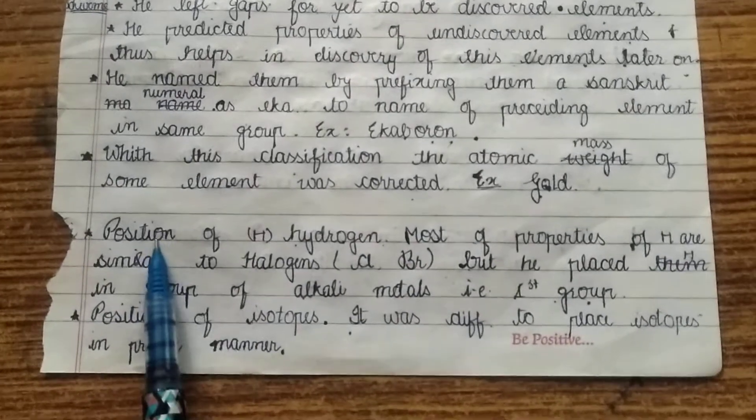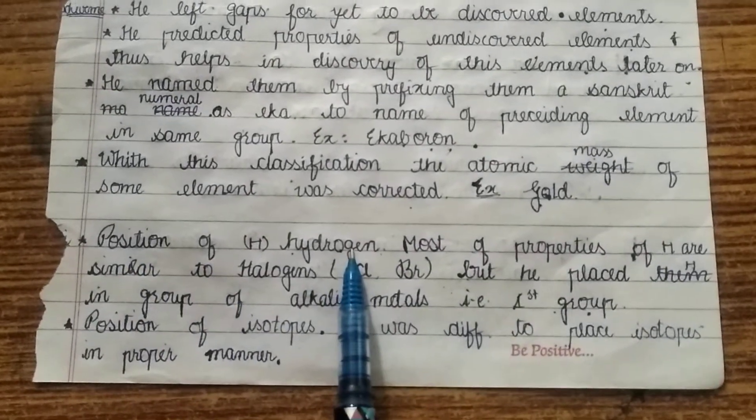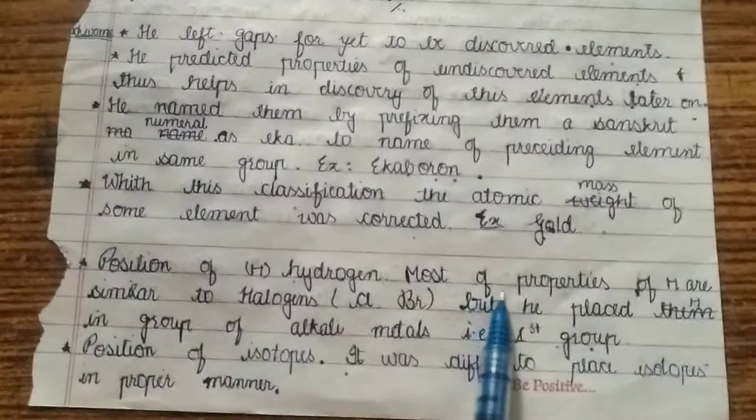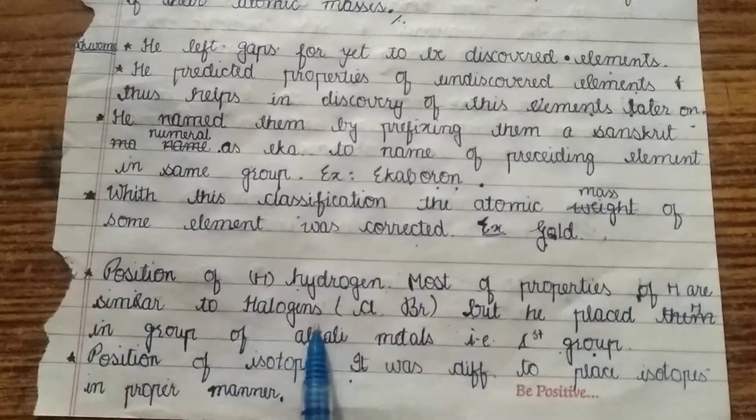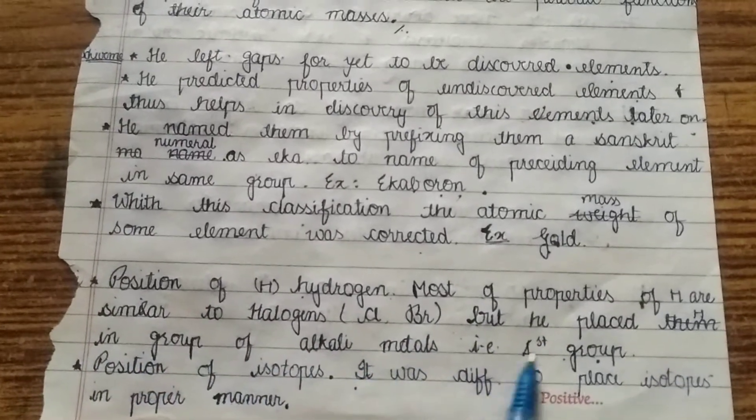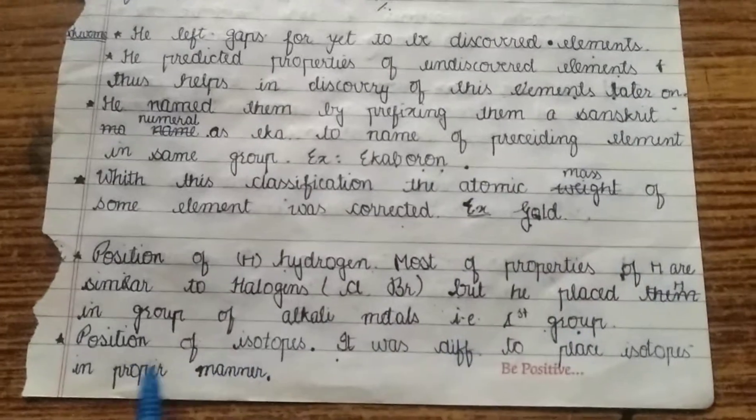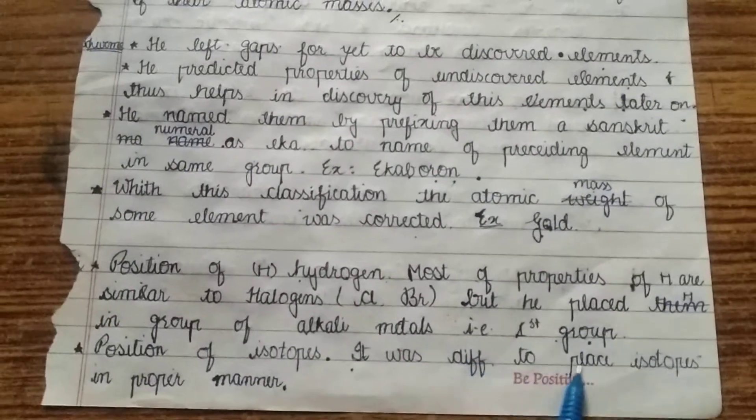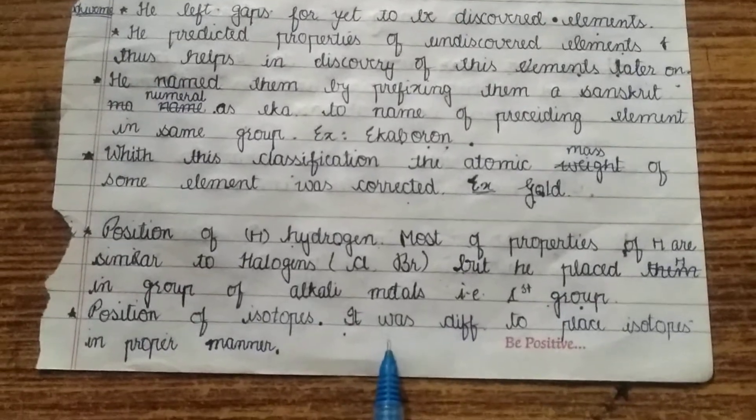Now the limitations. Position of hydrogen. The most difficult task for him was the position of hydrogen. Most of the properties of hydrogen are similar to the halogens, that is chlorine and bromine. But he placed them in the group of alkali metals, that is the first group. Position of isotopes. This is the second challenge. It was difficult to place isotopes in the proper manner.